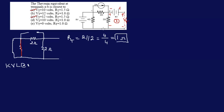Applying KVL through this particular loop, we have plus to minus on the 4-volt source, so that gives us minus 4 volts. Then plus to minus across the 2-ohm — let's call that voltage V2 — so we have minus V2. Then minus to plus, we have plus VT equals zero.